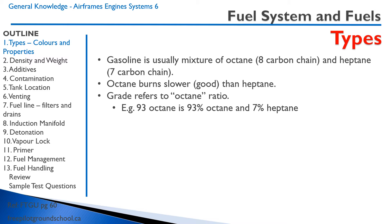For example, 93 octane is 93% octane and 7% heptane. It's going to be a higher quality gasoline than, let's say, 80 octane. And of course, 100% octane is the best.